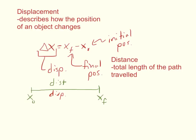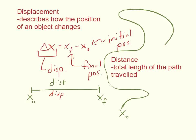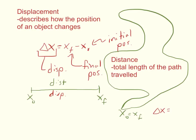Where distance and displacement can be different: if I start at x naught and travel a path that winds all the way around and ends up back where I started, then x final is the same position as where I started. My distance would be the entire length of the line — you'd measure that whole path. Displacement, however, delta x equals x final minus x initial. If those two positions are equal — say both are two meters — then two meters minus two meters gives a displacement of zero. So I can have a displacement of zero but have covered an actual distance. Distance and displacement are equal only for a straight-line path; otherwise distance will always be greater than displacement.